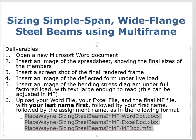You'll name the files according to a scheme: last name first, then first name. For example: Place_Wayne_Sizing_Steel_Beams_in_MultiFrame_Word for the Word document, with extension .docx. Then you'll have an Excel file and a multi-frame file with similar naming. All those will be uploaded for grading.